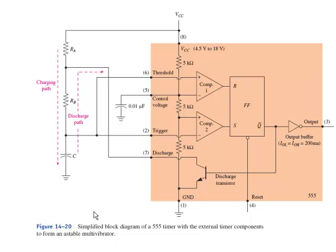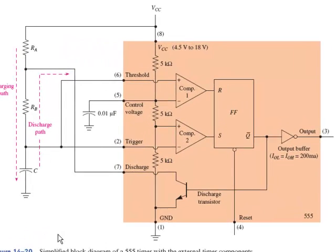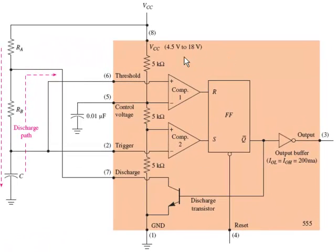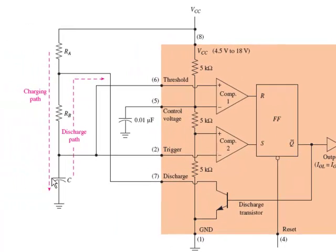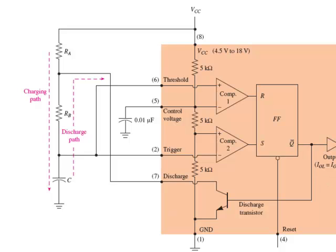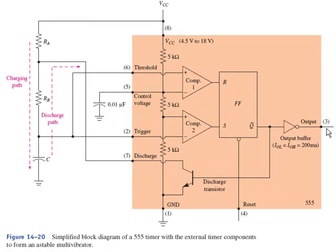Figure 14-20 shows the internal connections inside the 555 and some external R's and C's that we could put on here to form an astable operation. This is going to charge-discharge repeatedly so that the output is just going to be a nice square wave and we'll be able to predict exactly what the T high and T low is going to be. Basically inside the 555, everything inside this orange box, got its name from 5k, 5k, 5k in series and these are set up as a voltage divider.